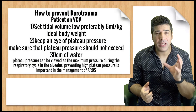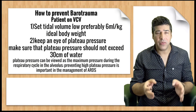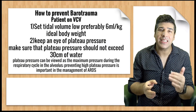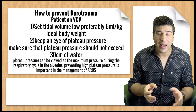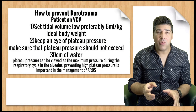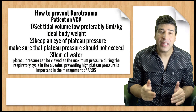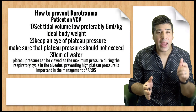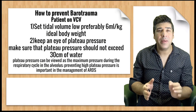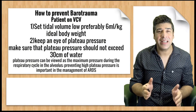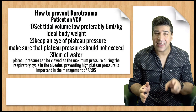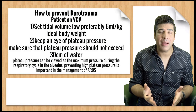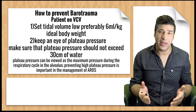In volume control ventilation, to prevent barotrauma we decrease the tidal volume to 6 ml per kg ideal body weight and simultaneously keep an eye on plateau pressure — that is the maximum alveolar pressure. We must ensure alveolar pressure stays less than 30 cmH₂O. Keeping it below 30 cmH₂O greatly reduces the likelihood of pressure-related lung injury.